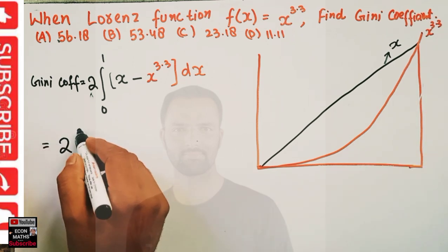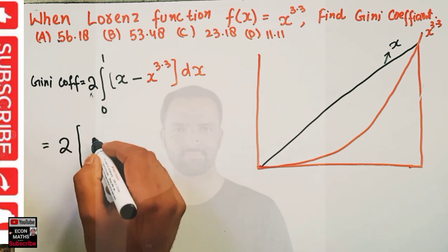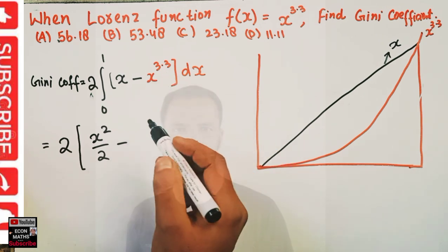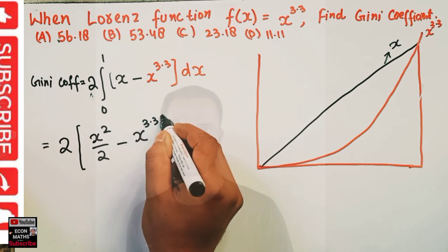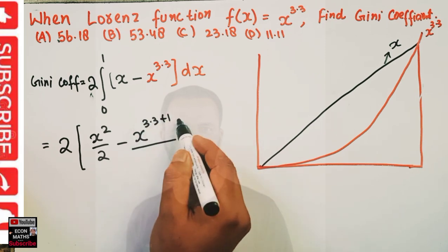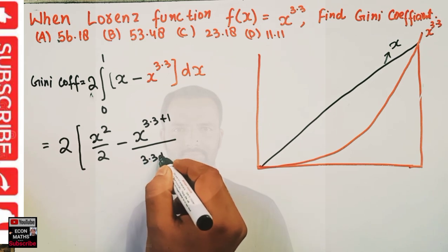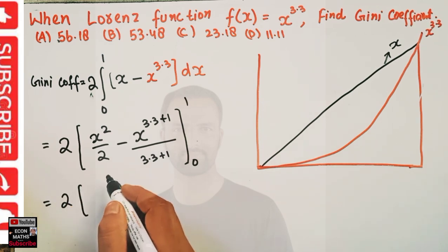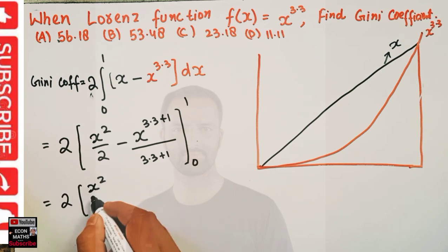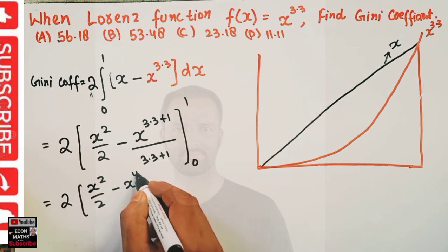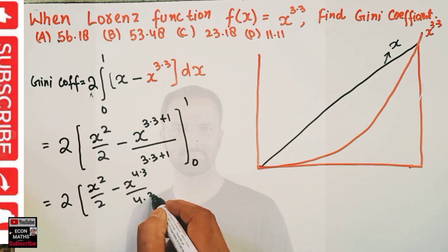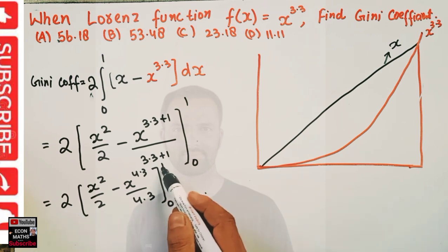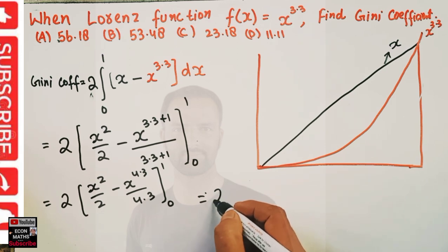We integrate: the integral of x is x squared over 2, and the integral of x to the power 3.3 is x to the power 4.3 over 4.3, by the power rule of integration. So this becomes 2 times [x squared over 2 minus x to the power 4.3 over 4.3], evaluated from 0 to 1.